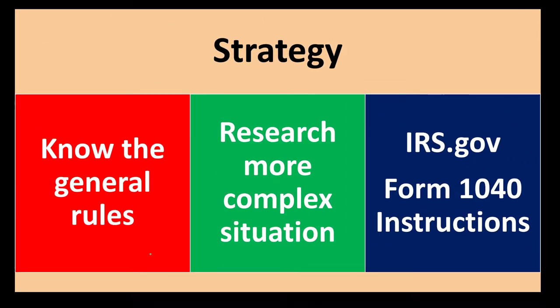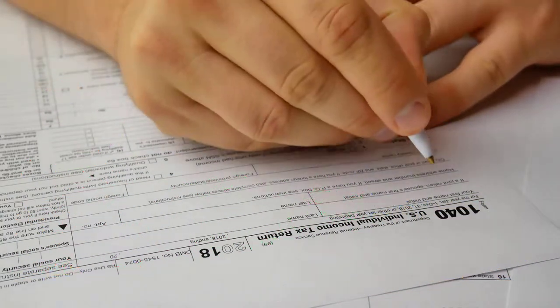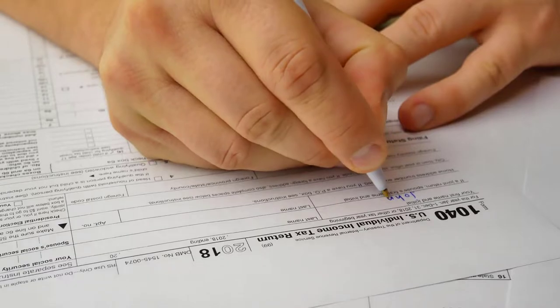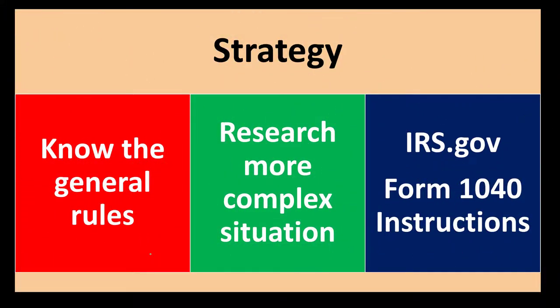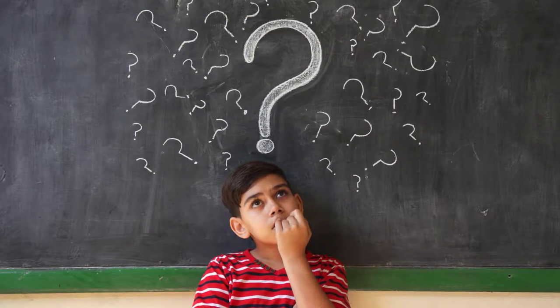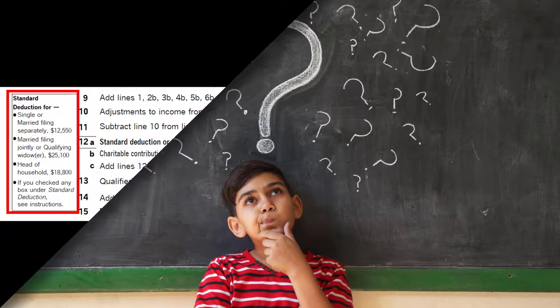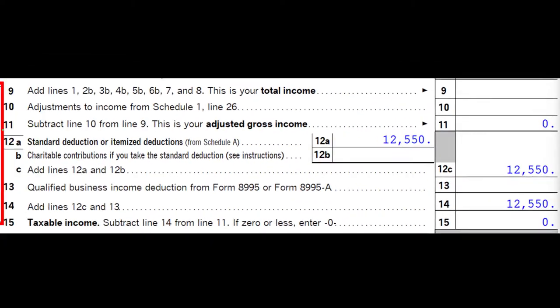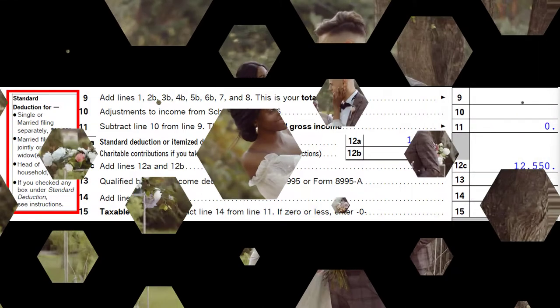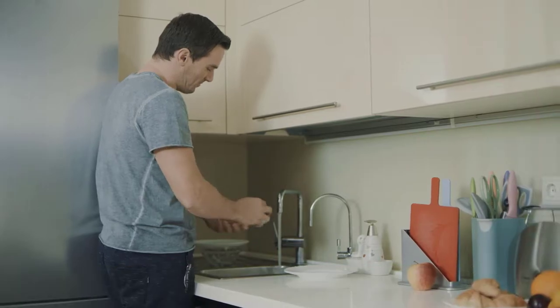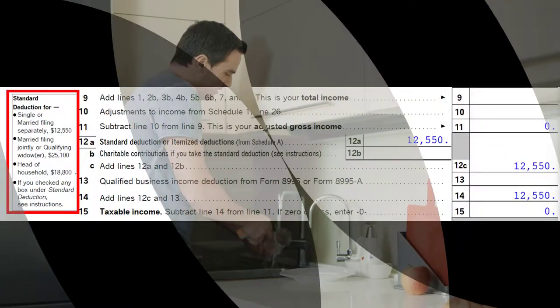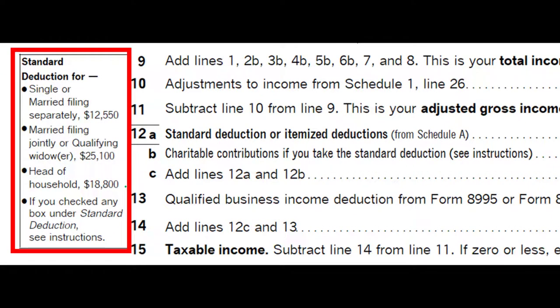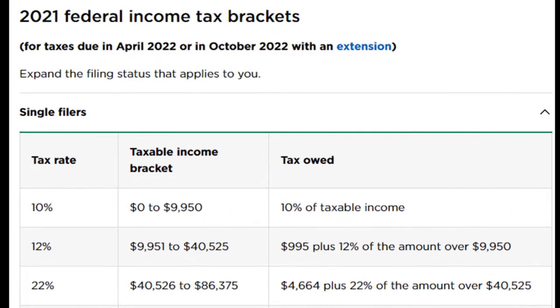They'll refer you to publications that could help in gray areas. You also want to know the general hierarchy of which filing statuses would be better, so you can talk intelligently with clients about them. There is an impact on the standard deduction. You can remember the main number for single or married filing separately — which is $12,550 — then double it for married filing jointly, giving you $25,100. Head of household will typically be in between at $18,800. There can also be differences based on age or whether someone is blind.